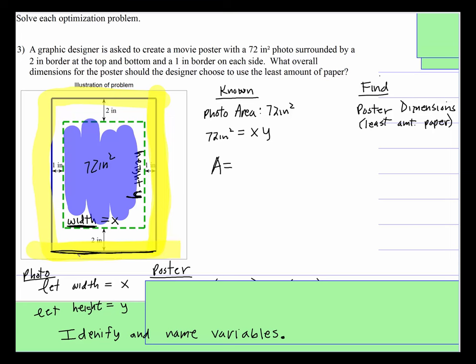So what do we know about this width and this height? Well, this width right here is x plus this 1 inch plus this 1 inch. So this width is x plus 2. And this height is, that would be y plus 4.